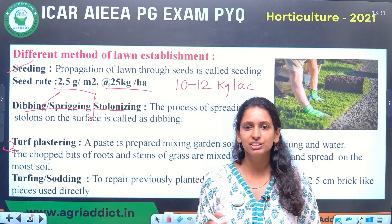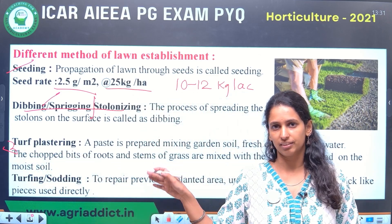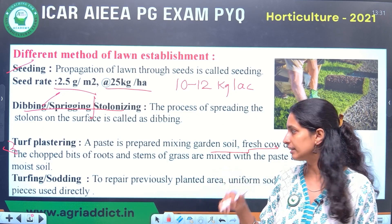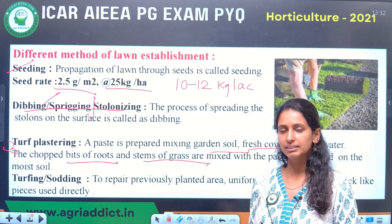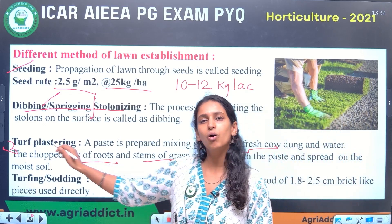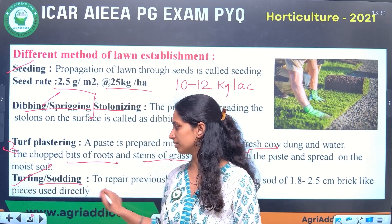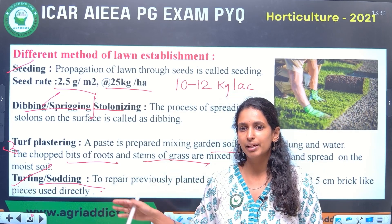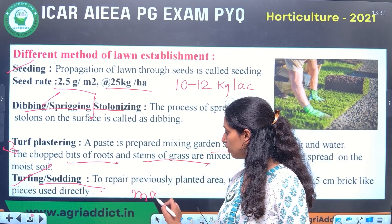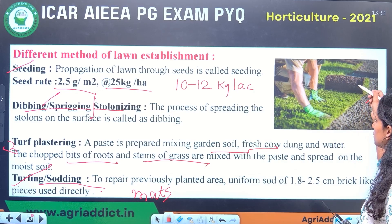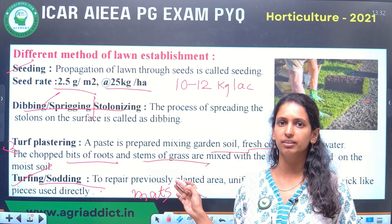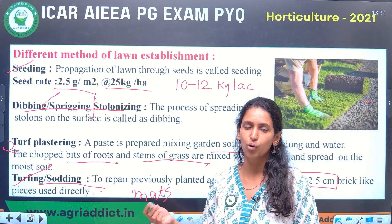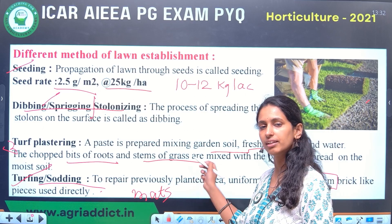Third method is Plastering. Similar to cement plastering, they mix garden soil, fresh cow dung, and water, and add bits of roots and stems of grass to make a paste, which is spread on moist soil — this is called turf plastering. The last method is Turfing or Sodding. This is the costliest and quickest method, using ready-made lawn mats that are foldable. You spread the mat over moist land; it already has 1.8 to 2.5 cm thickness and is mainly used for repairing old lawns.